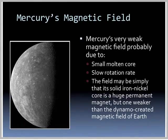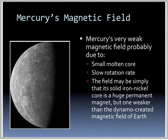Mercury has a very weak magnetic field, probably due to its small molten core and slow rotation rate. The field may simply be that of its solid nickel-iron core acting like a huge permanent magnet, which would be much weaker than the dynamo-created magnetic field on Earth.